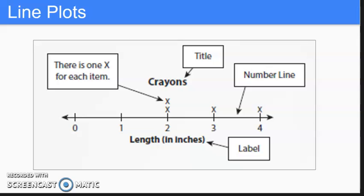The data is displayed over a number line, which may not always start at zero. One X is made for each piece of data. Also included in the display should be a title and a label showing the units used to measure.